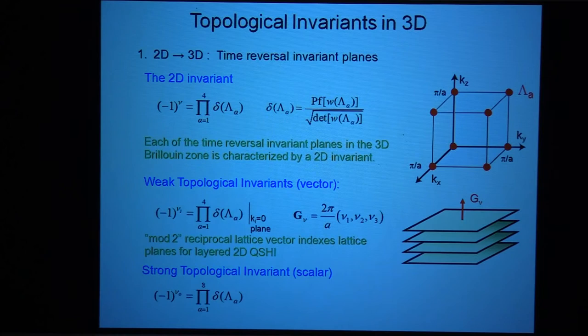So let me just say one word about how we determine these three-dimensional. You see, so one way, there are different ways you can do it. One way you can do it is by thinking of the. So in a three-dimensional system, in the three-dimensional Brillouin zone, there are two-dimensional planes, which are time reversal invariant. Like the plane KZ equals zero is a time reversal invariant plane.